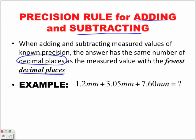So in other words, we have one decimal place, we have two decimal places, and we have two decimal places. So the least number of decimal places in our question is one.